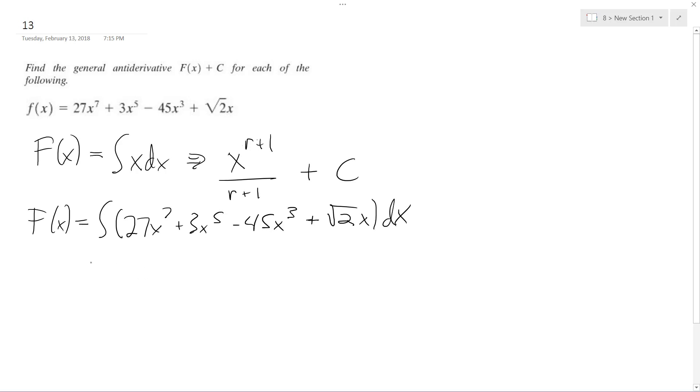Now what we did in the concept proof up there. So 27X to the 7 plus 1 over 7 plus 1, plus 3X to the 5th plus 1 over 5 plus 1, minus 45X to the 3 plus 1 over 3 plus 1, plus square root of 2X to the 1 plus 1 over 1 plus 1, plus C.